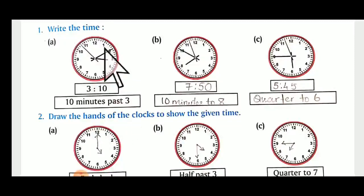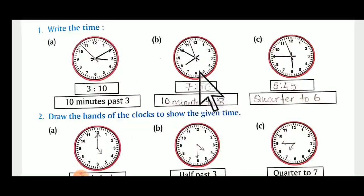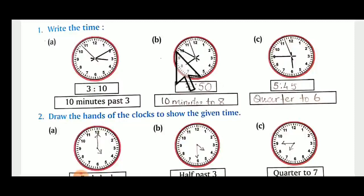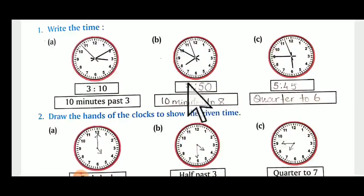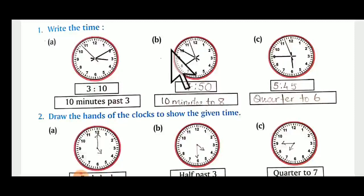The hour is three and ten minutes have passed, so it will be ten minutes past three. The next one: see the smaller needle towards eight and the bigger minutes hand towards ten, and the seconds hand is past five — three seconds are there. That means we are looking at eight. We have passed seven hours, so it is seven fifty — because ten fives are fifty.